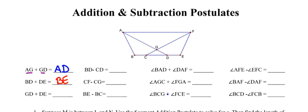We approach the third one exactly the same way. The distance between points G and D is represented by the purple segment, and the distance between points D and E by the green segment. This time something interesting happens: because D is not between points G and E — in other words, because points G, D, and E do not lie on the same straight line — we cannot come up with a segment that represents that sum. So this one has no answer; it cannot be answered.